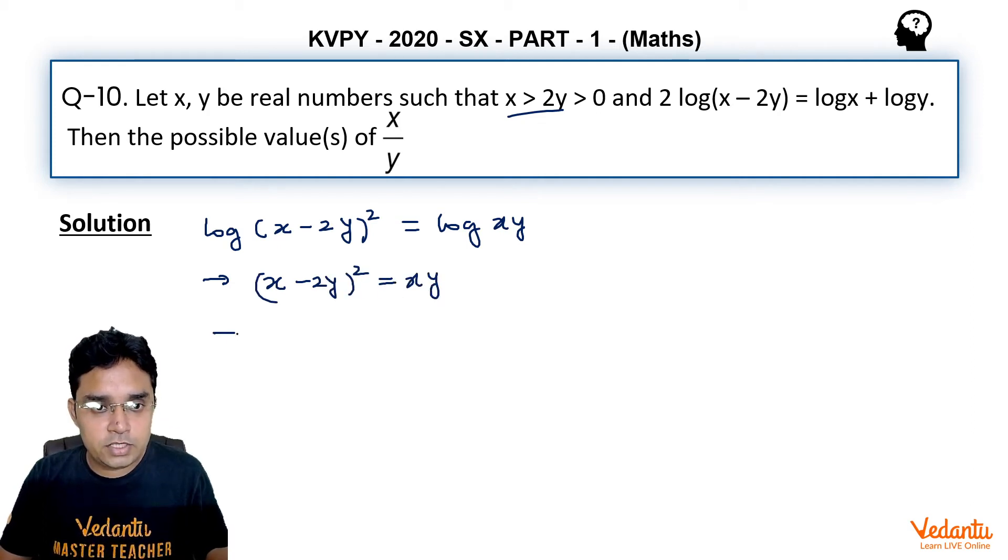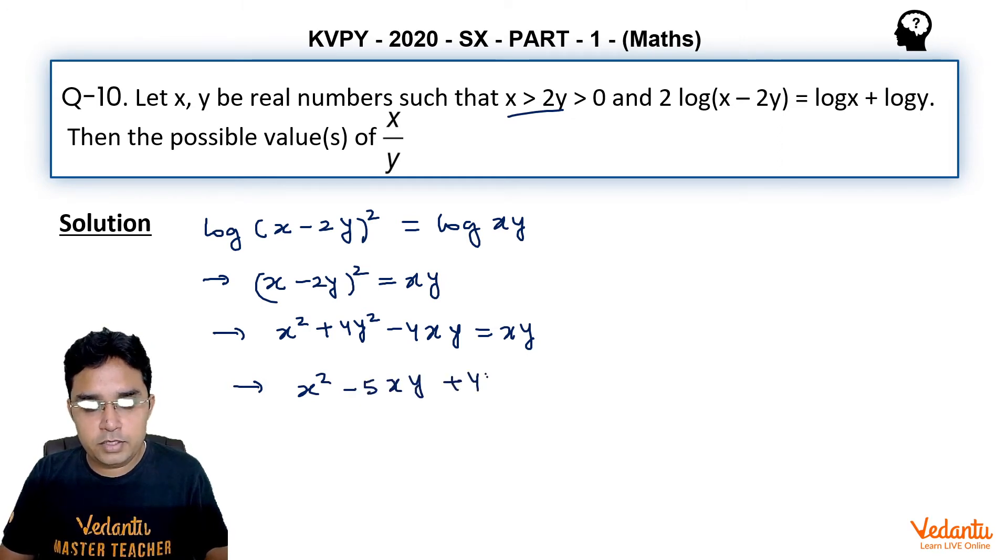This becomes x^2 + 4y^2 - 4xy = xy, which simplifies to the quadratic x^2 - 5xy + 4y^2 = 0.